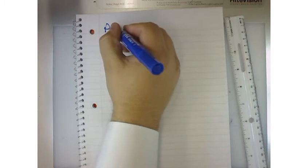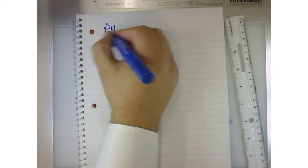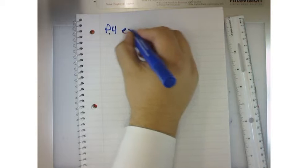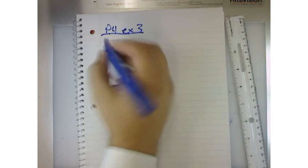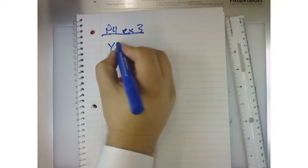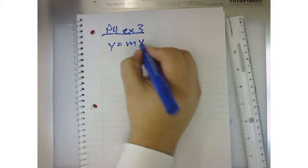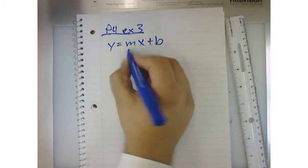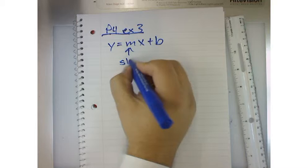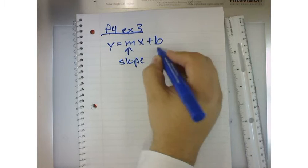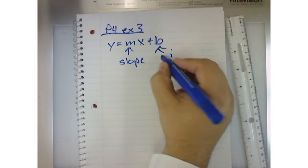Example number three talks about the slope-intercept form. So we've got y equals mx plus b, where m represents the slope of the equation on the line, and b represents the y-intercept.